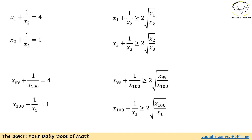To solve this problem we are going to use the AM-GM inequality. In the past we tried using AM-GM inequality in different problems — you can find those in other videos posted on the channel. Here, let's focus on the first equation. The two variables we have are x1 and 1 over x2.